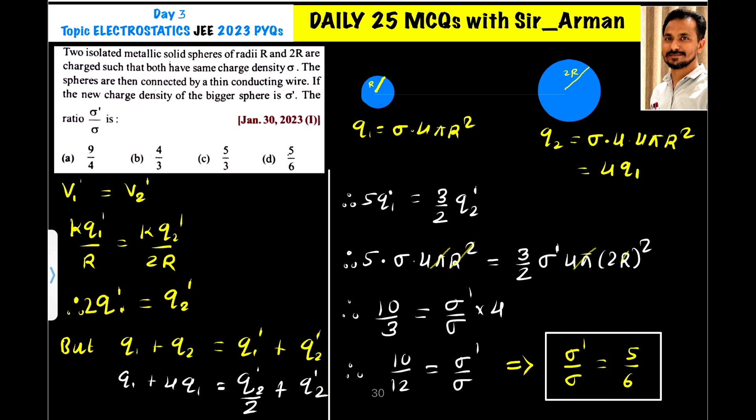Now what is q1? Sigma 4πr². So here it is 5 sigma 4πr² equals 3 by 2 q2 dash.